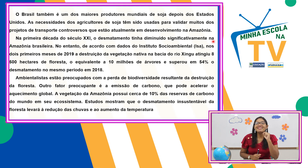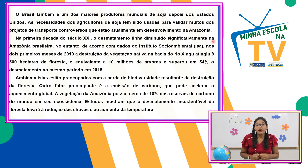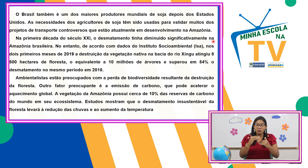Na primeira década do século XXI, o desmatamento tinha diminuído de forma bem significativa na Amazônia brasileira. No entanto, de acordo com dados do Instituto Socioambiental, nos dois primeiros meses de 2019, a destruição da vegetação nativa na bacia do rio Xingu atingiu cerca de 8.500 hectares da floresta — o equivalente a 10 milhões de árvores — e superou em 54% o desmatamento no mesmo período de 2018. Infelizmente, é um número que está aumentando com o decorrer dos anos.